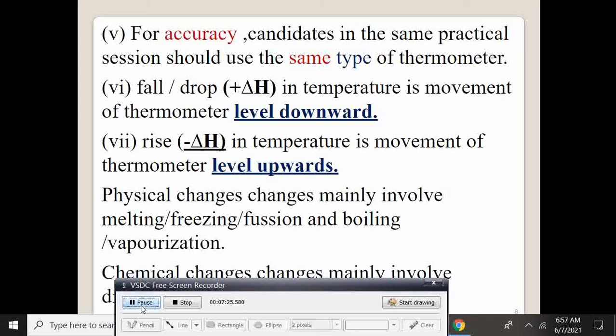So, a drop in temperature is movement of a thermometer level downwards. And a rise is the movement of a thermometer level upwards. Physical changes involve melting, freezing, fission, boiling, and vaporization.